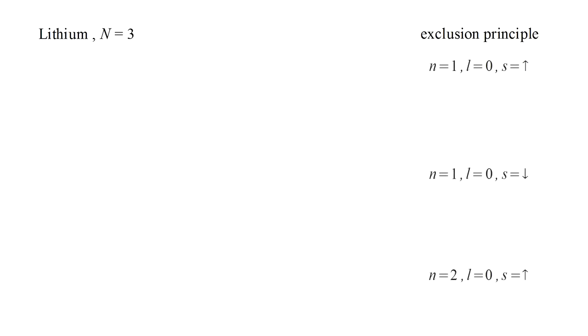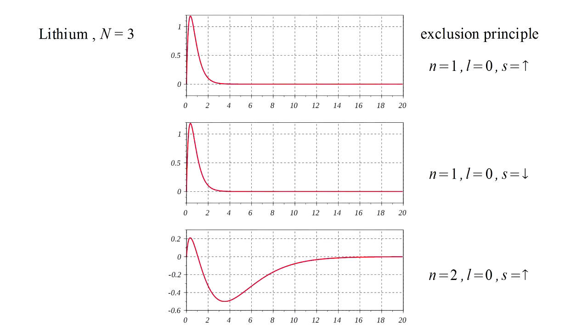The third electron of lithium, therefore, has to go into an n equals two orbital, either an s orbital with l equals zero, or p orbital with l equals one. The s orbital has lower energy, so it represents the ground state of lithium. The two s orbital energy of minus 4.79 electron volts is in rough agreement with the observed lithium ionization energy of 5.39 electron volts.